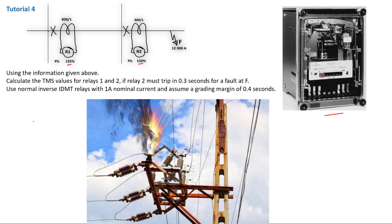In this tutorial, we need to calculate the TMS values for relay 1 and relay 2. Relay 2 must trip in 0.3 seconds. We already have a predetermined fault at this busbar — a fault of 12 kilo-amps — and because of that fault, relay R2 is set up to trip at 0.3 seconds for the fault at F.